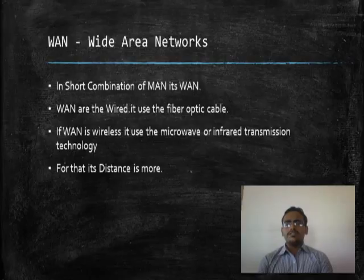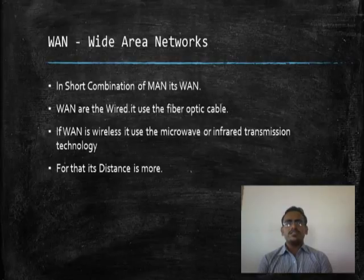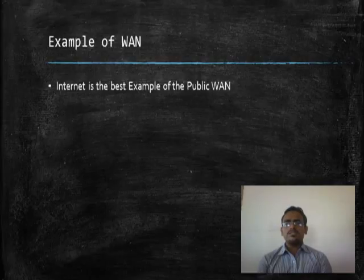Now Wide Area Network. WAN is the biggest area network in the world. WAN can be wired or wireless. If wired, it uses fiber optic; if wireless, it uses infrared or microwave transmission technology. In a WAN network, the distance is much greater. The internet is the best example of the WAN network. Thank you.